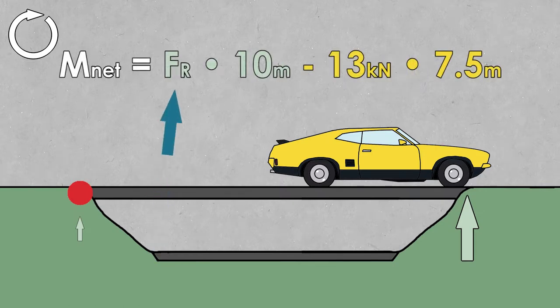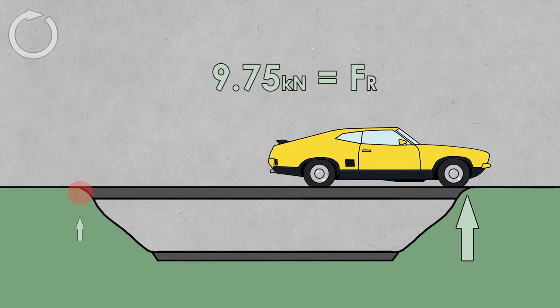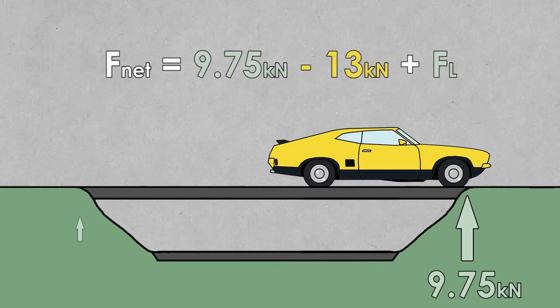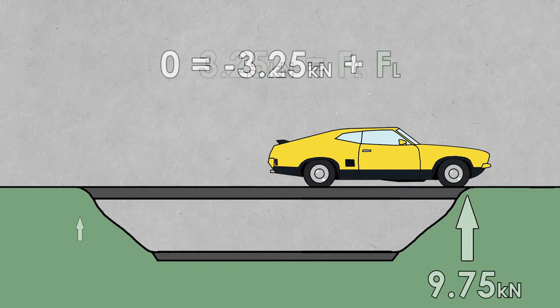Again, this is just the force multiplied by the distance from our point. We set that equation equal to zero, solve it, and we get the force on the right side of the bridge. Then we can take the moment at another point, or we can just look at the net force, or the sum of all the forces, to find the left support.